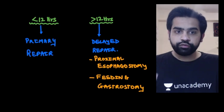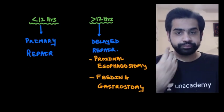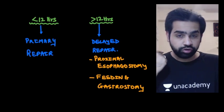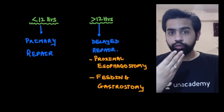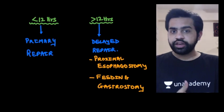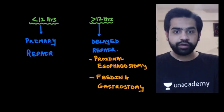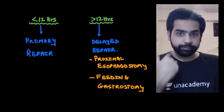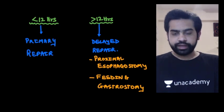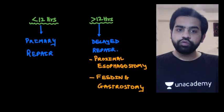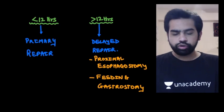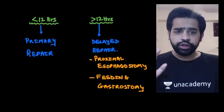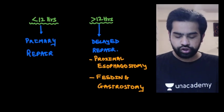In delayed repair, you go for proximal esophagus choking — this is called a spit fistula, or pharyngoesophagostomy. This helps drain salivary secretions via the spit fistula. At the same time, to feed the patient, you go for a feeding gastrostomy or feeding jejunostomy. This is how you manage a patient with esophageal perforation presenting late.